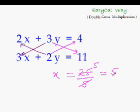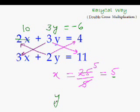So now let us quickly find the value of y as well. Put this value of x in this equation. 2 times 5 is 10, and 10 plus 3y is equal to 4. That means 3y would be equal to 4 minus 10. 4 minus 10 is minus 6. So that means y would be equal to minus 6 divided by 3, that is minus 2. Question solved.